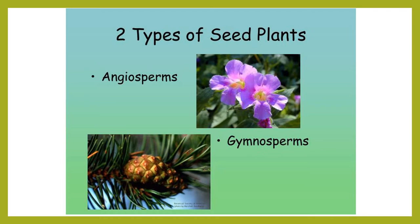Now we're going to learn two new science terms. As you know, there are two types of seed plants, but now we're going to give them scientific names. The angiosperms is the scientific name for flowering plants, and the gymnosperms is the scientific name for conifers. In science books or videos, you'll hear these terms — angiosperms for flowering plants and gymnosperms for conifers.